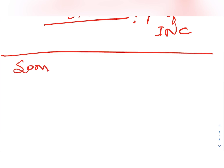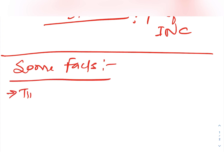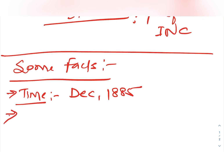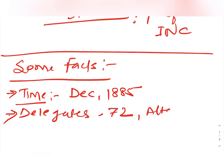First, let me clarify some facts which are very important for our examination. The date on which the INC was formed is December 1885. There were 72 delegates who attended.